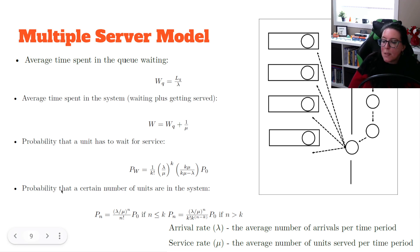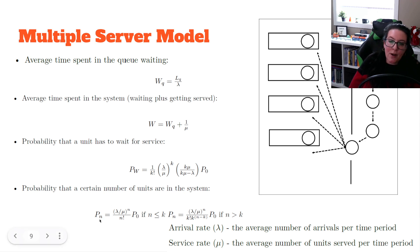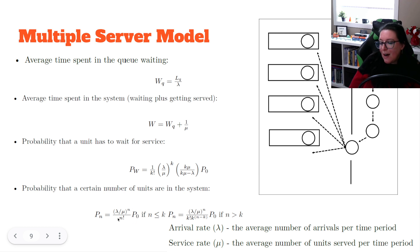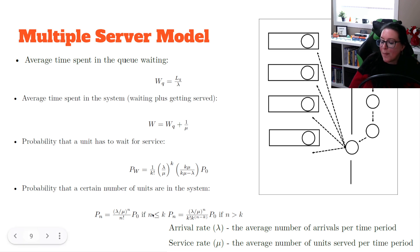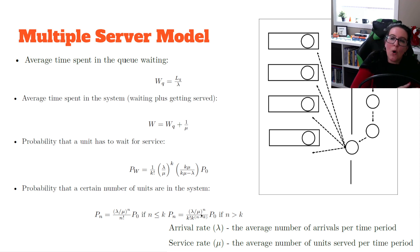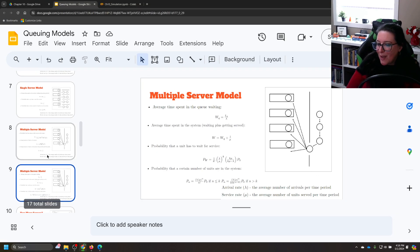The probability that a certain number of units are in the system depends on P0, the arrival rate, and the service rate — and uses two different formulas depending on whether n is less than k or greater than k. You don't need to derive these formulas; you just need to use them. Let's use them by going into our code.